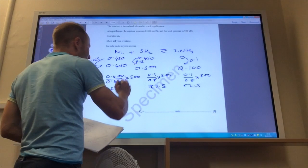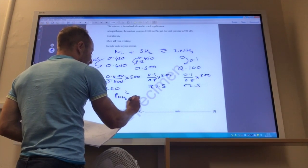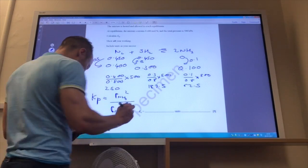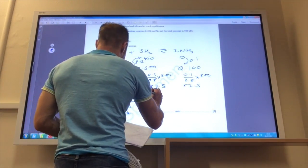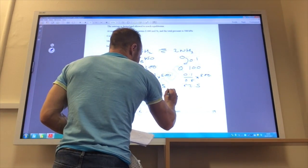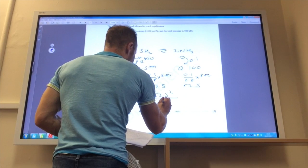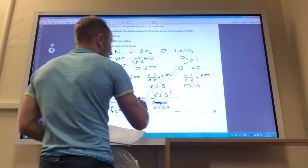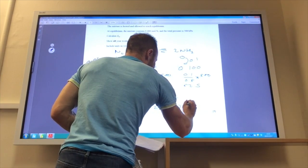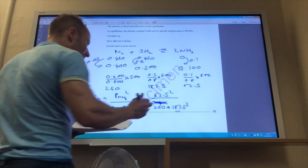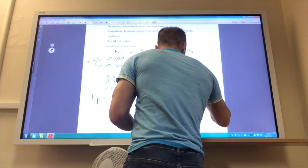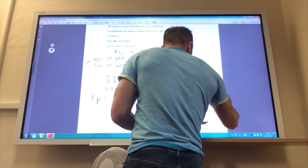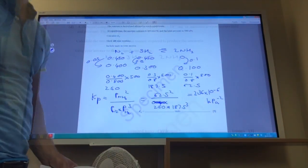Then Kp, as you know, is going to be the partial pressure of ammonia squared divided by the partial pressure of nitrogen times the partial pressure of hydrogen cubed. If you do that, it's going to be ammonia, which is 62.5 squared, times nitrogen which is 250, times by hydrogen which is 187.5 cubed. If you do all of that and work it out, you will find that Kp is 2.36 times 10 to the minus 6, and the units are kilopascals to the minus 2.